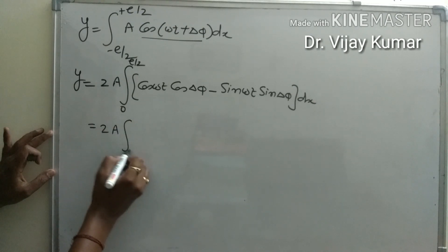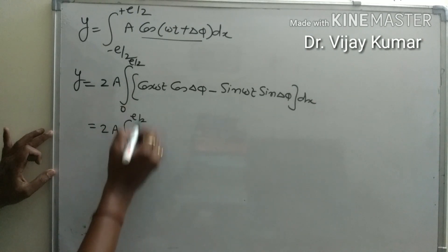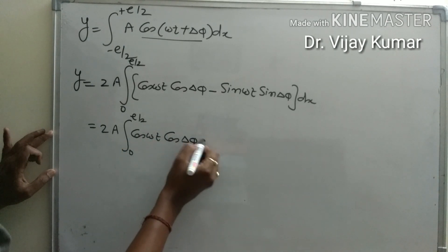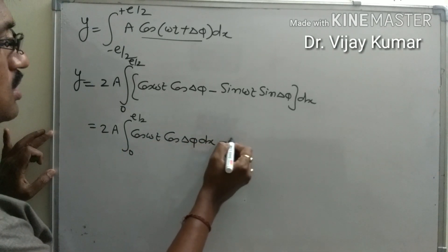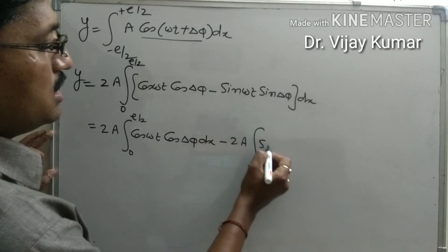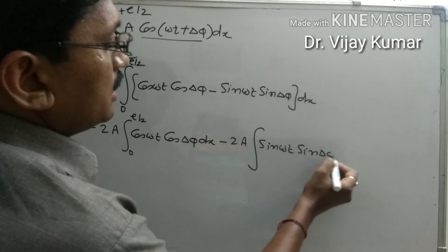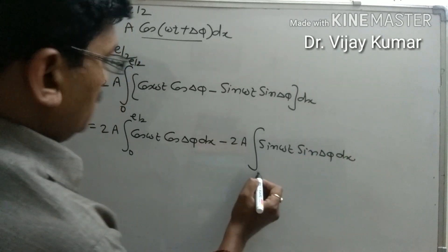We can write it as the integral from zero to e by 2 of cos(omega t) cos(delta phi) dx minus twice a times the integration of sin(omega t) sin(delta phi) dx with the same limits.